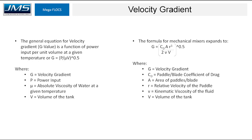The formula expands a little bit when we're dealing with mechanical mixers. The power input is made up of the coefficient of drag, area of your paddle or mixing blade, and the relative velocity between that blade and the water. The paddle area and speed are the easiest variables to adjust, so that's typically how we achieve a tapered velocity between stages in a flocculation basin, by varying the area and speed of the paddles.